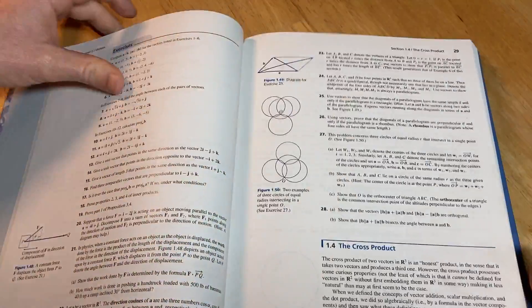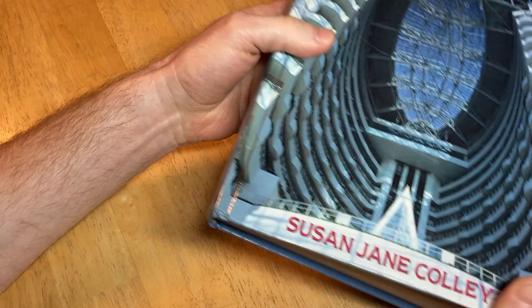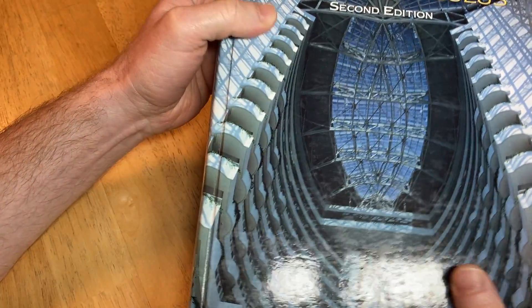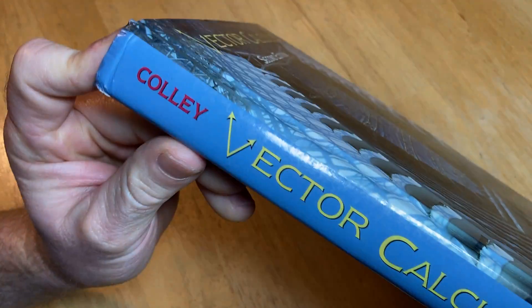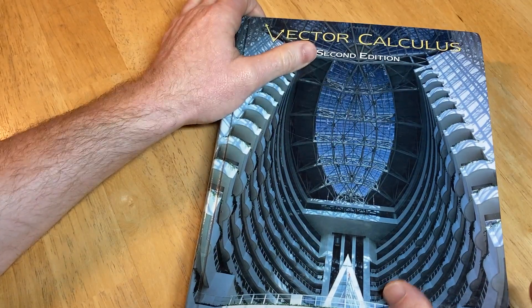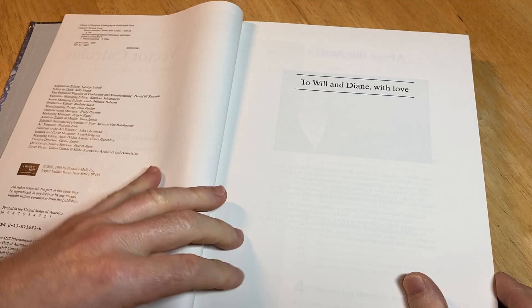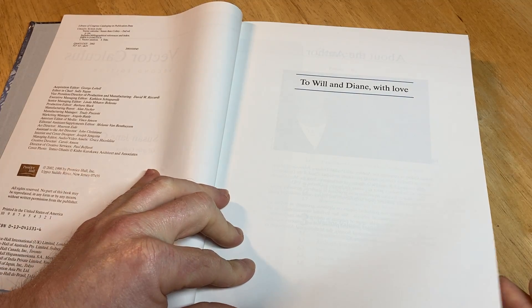I've had it for a while now and it's written by Susan Jane Colley. It's called Vector Calculus. And this is the second edition. This is just a wonderful book. I don't know if there's a newer edition, but I'll try to leave links in the description to an edition in case you want to check it out.